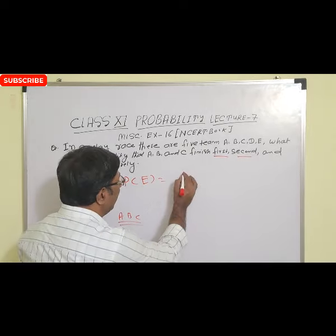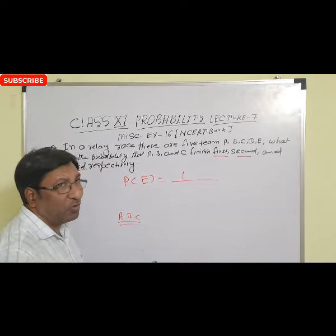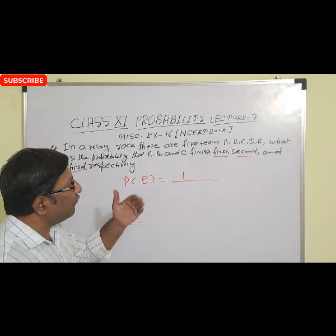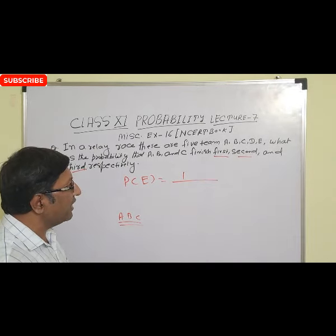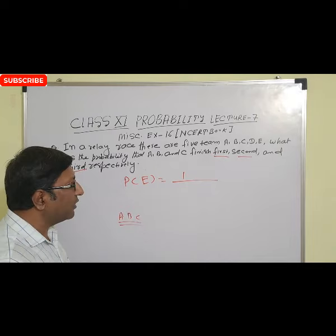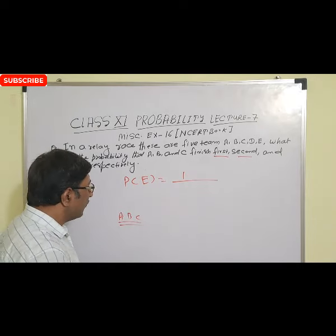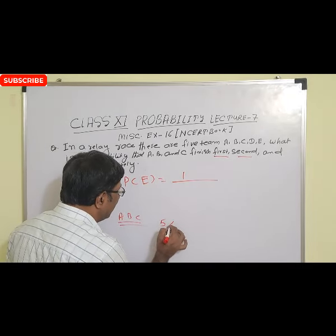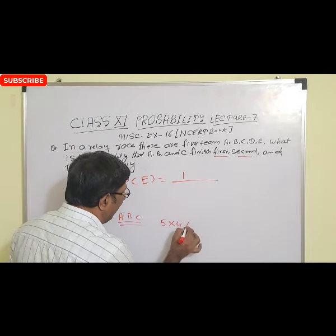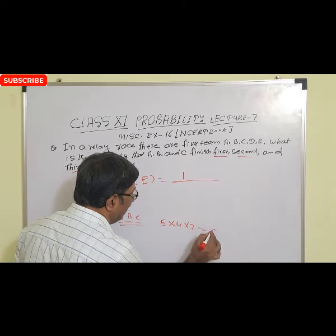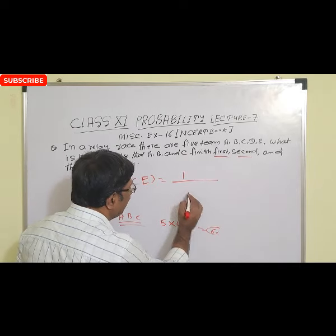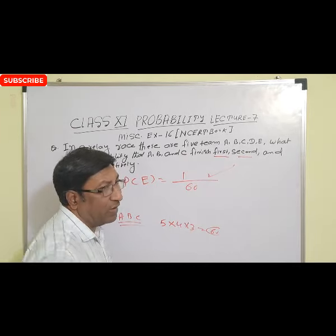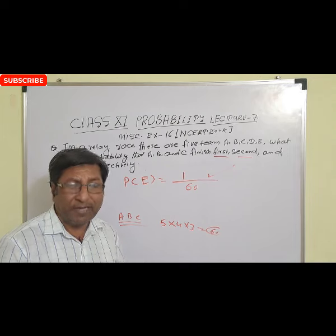So favorable outcome is 1. Now total outcome is how much? There are 5 teams and we need 1st, 2nd, 3rd position. So 1st position can be 5, 2nd is 4, and 3rd is 3. So 5 × 4 × 3 is 60. So our answer is 1 by 60.